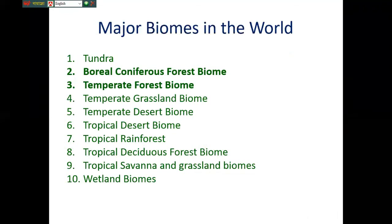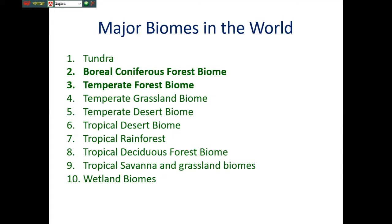The major biomes in the world — there are around 10 biomes in the world. Among them: the tundra, the boreal coniferous forest biome, temperate forest biome, temperate grassland biome, temperate desert biome, tropical desert biome, tropical rainforest, tropical deciduous forest biome, tropical savanna and grassland biomes, and the wetland biomes.